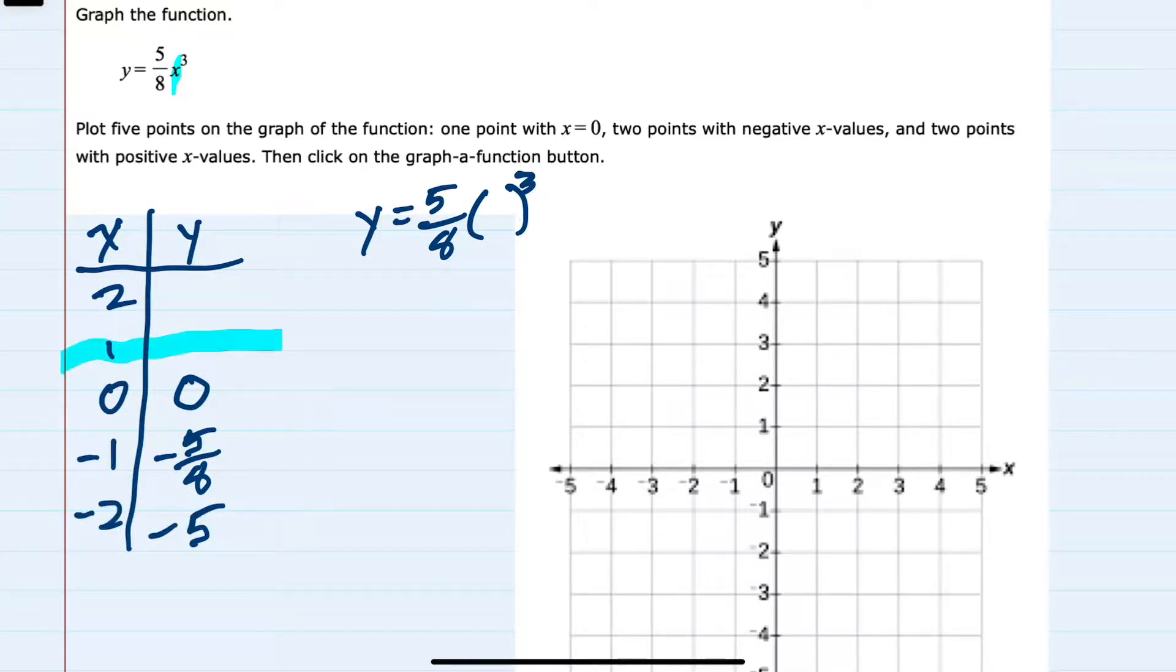We move on to x equals 1, and solving we have 5 eighths times 1 cubed, which is just 1, so y equals 5 eighths.